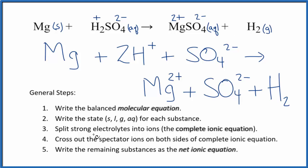We can cross out spectator ions. These are ions that are on both sides of the complete ionic equation. If we look, the only thing that's on both sides, here in the reactants and here in the products, is the sulfate ion. So let's cross the sulfate ion out. It's a spectator ion.